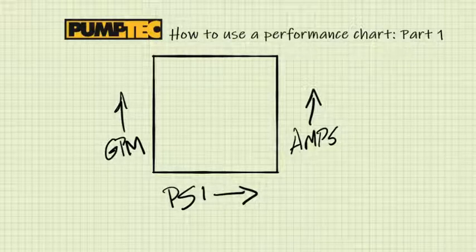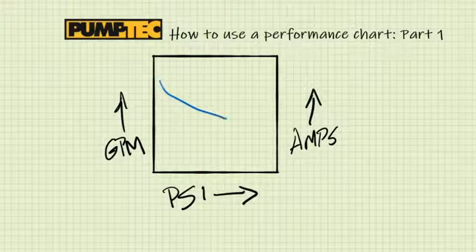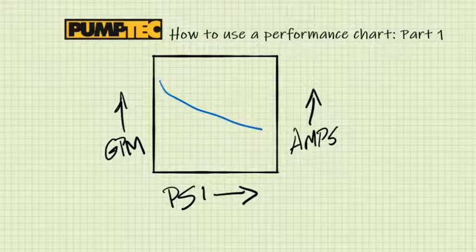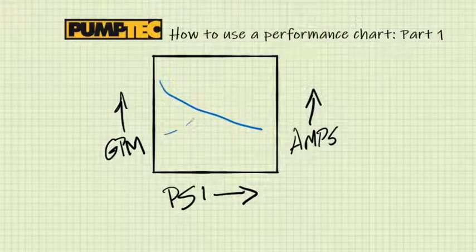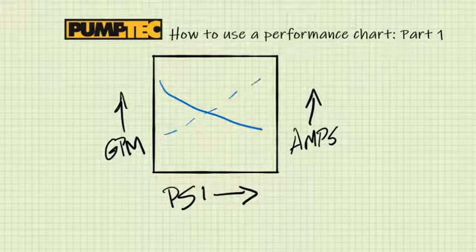Performance charts have a pair of curves: a solid curve for GPM versus PSI and a dashed curve for amps versus PSI.